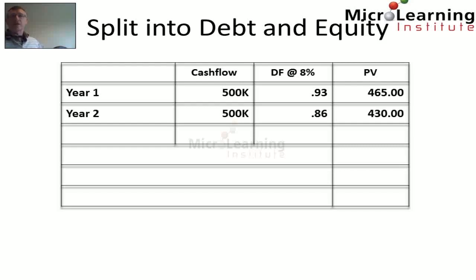Similarly in year 2, another cash amount of $500k is paid by Bertrand to the other entity, and the discount factor for 2 years at 8% is 0.86. So the present value of this second $500k payment is $430,000.